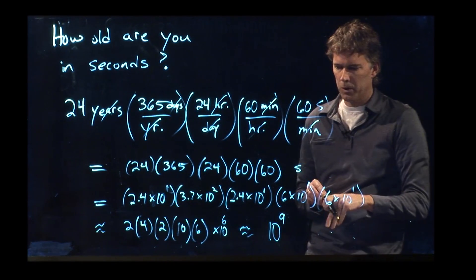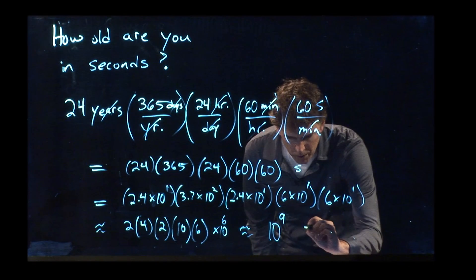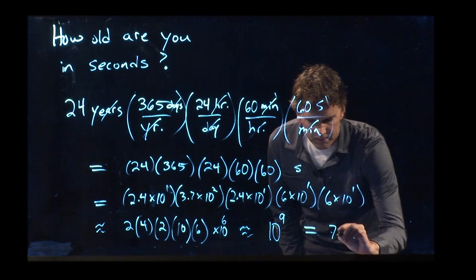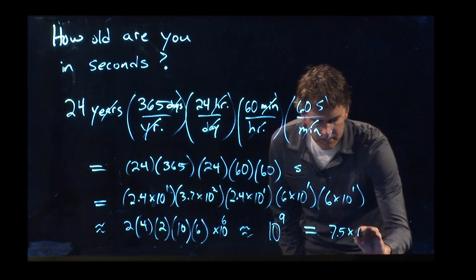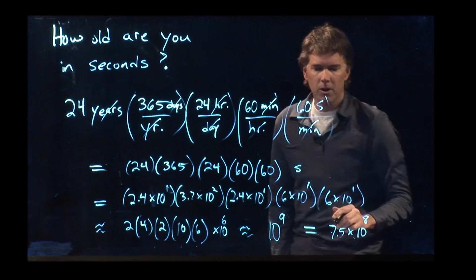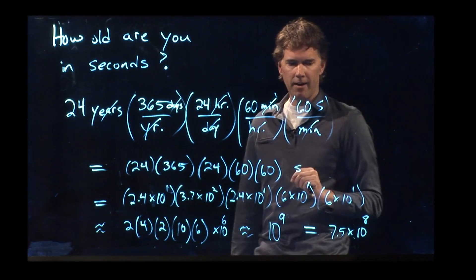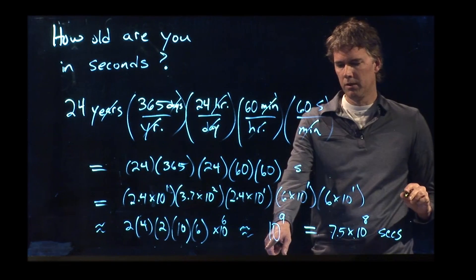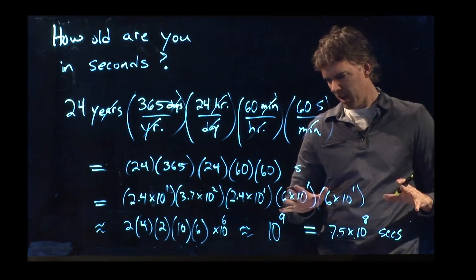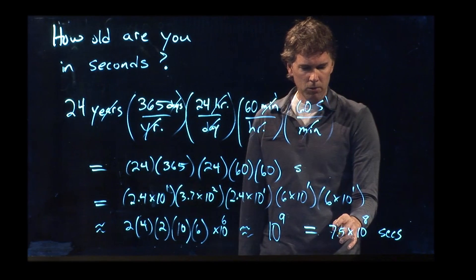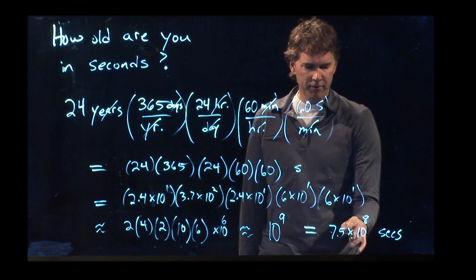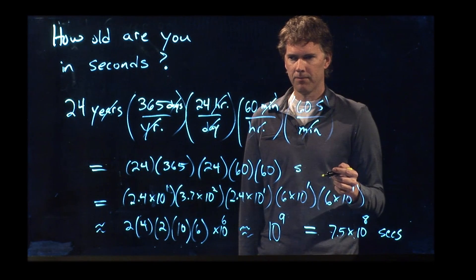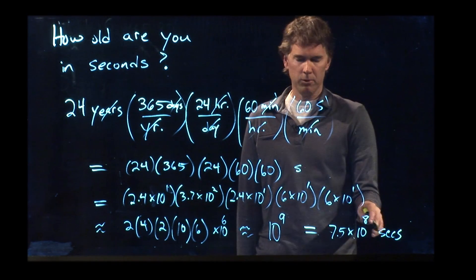I suspect the real answer is a little bit less than that. What did you guys get for your real answer? 7.57 × 10⁸. Okay, so it is 0.75 billion — so that's how old you are in seconds. You can see our approximation was off by about 25 percent. We can probably do better than that next time, but you are 750 million seconds old.